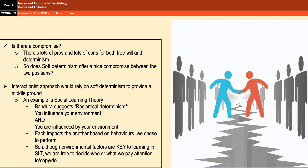Both sides of the argument have merits and equally have problems to contend with. In reality, it's unlikely that we'll ever be able to discover if we truly have free will or not. It may be more useful to adopt an interactionist position, which could provide a nice compromise between the two extremes. For example, social learning theory advocates reciprocal determinism, which suggests that people are influenced by their environment, but they also influence their environment through the behaviors they choose to perform — each impacts on the other. This is an example of soft determinism, because this element of choice suggests there is some free will in the way people behave. This also provides a more agreeable position because it accepts cause and effect, which works for scientific approaches, but also allows us some choice, which is important for well-being and for legal issues.